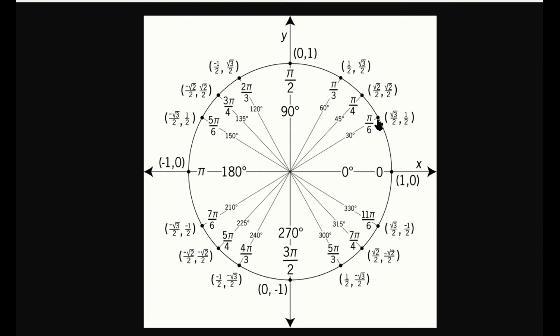If you start at pi over 6 and go 4pi — two times around the circle — you also get the same cosine and sine values. You could say it's periodic with a period of 4pi, but that's why we take the smallest such value to be called the period. That's why sine and cosine are periodic functions with a period of 2pi.